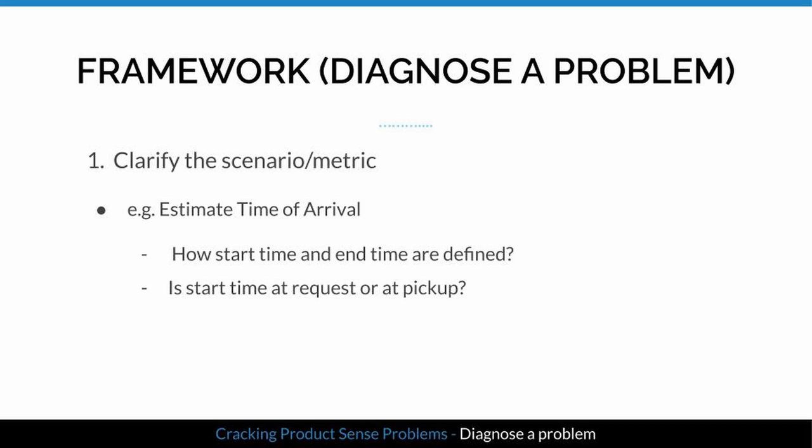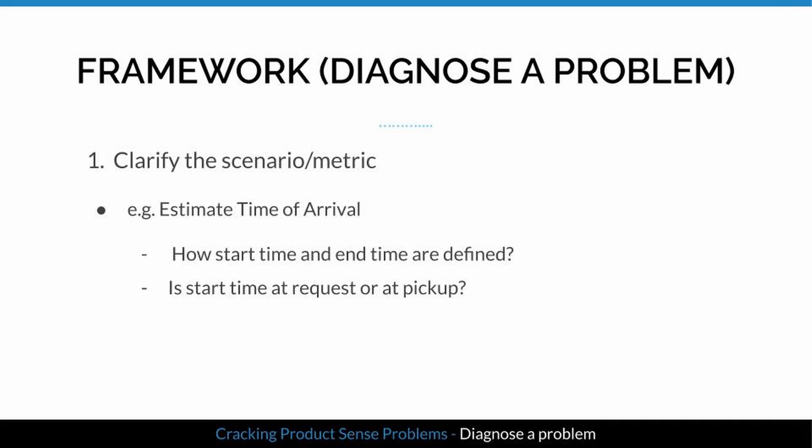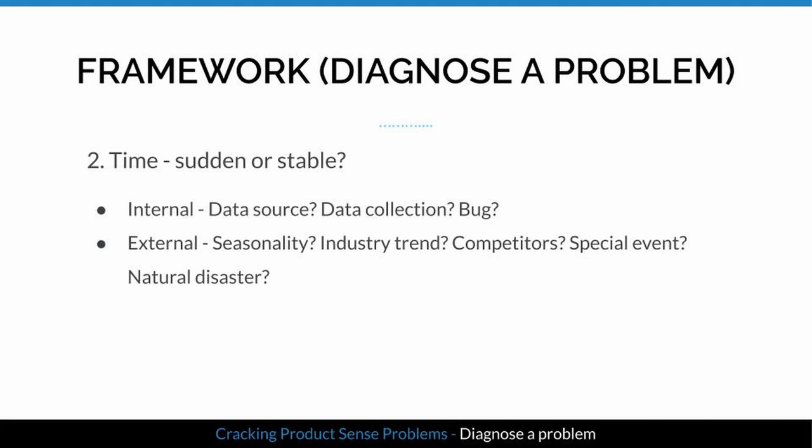First, clarify the definition of the scenario and the metric. For the ETA question, clarify how start time and end time are defined — is start time when the rider sent a request or when the rider was picked up? Second, look at the time aspect: did the change happen suddenly or progressively? Then analyze internal factors such as the data source, data collection process, or bugs in production code.